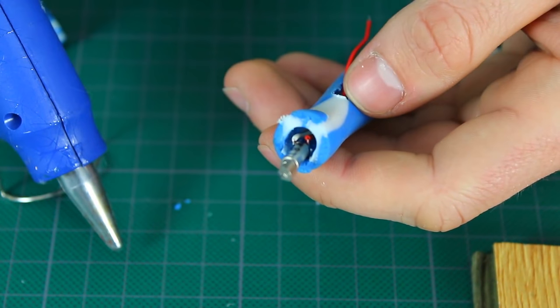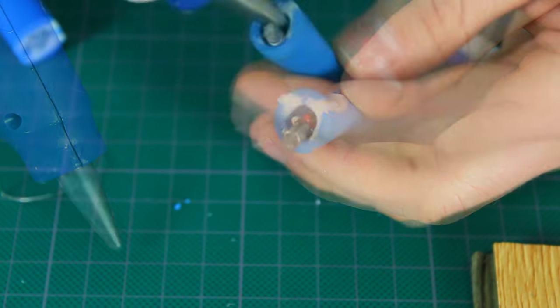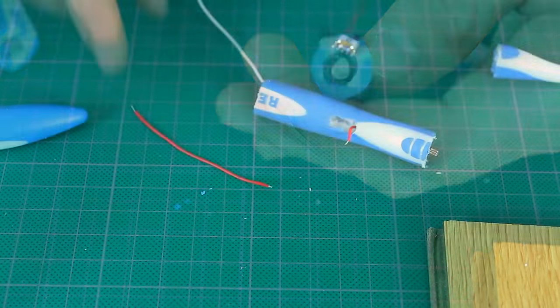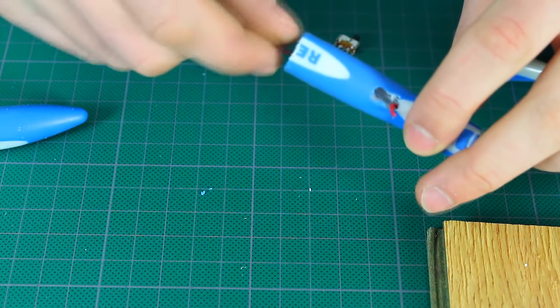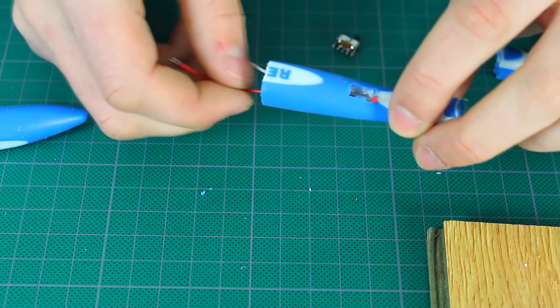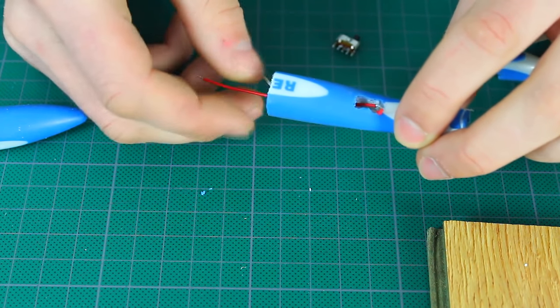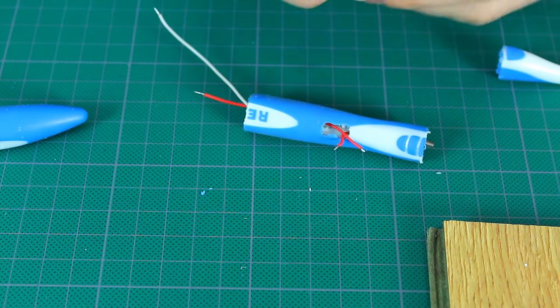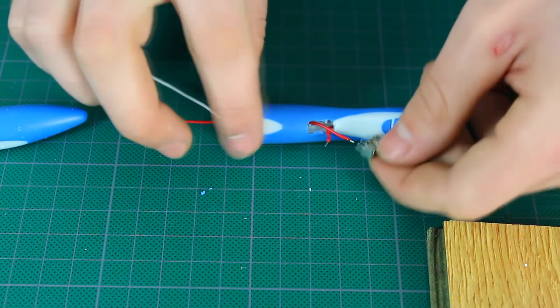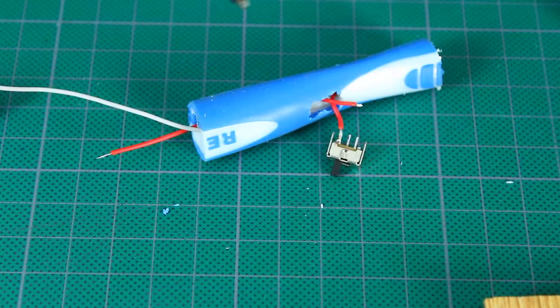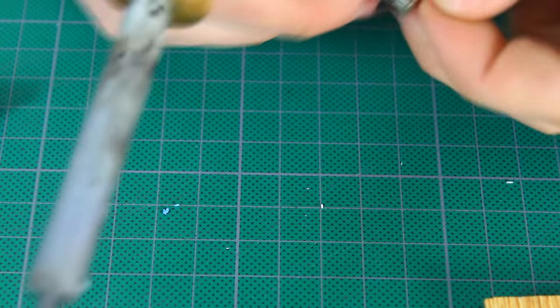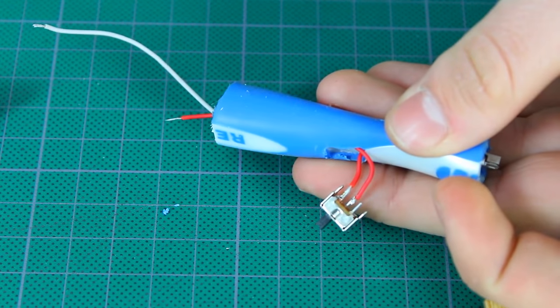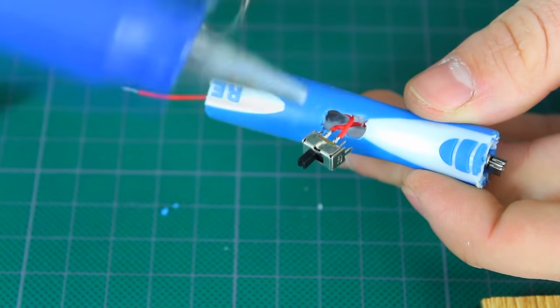Using hot glue, fixate the motor strictly in the center. Pass one more short wire into the handle and solder the switch to it. Fixate the switch using hot glue.